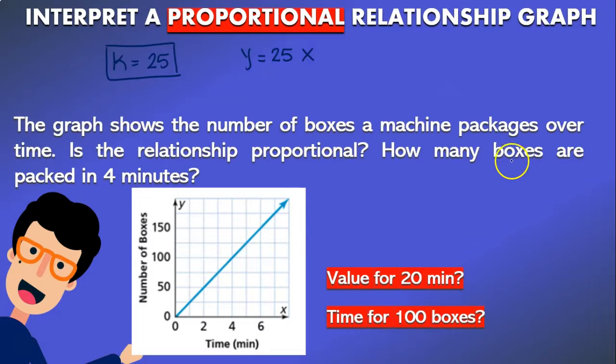Now, how many boxes are packed in 4 minutes? We have to remember that boxes is our value for y and minutes is our value for x. Now that we know that we can find our value for the boxes. So remember boxes equals y and it's equal to 25 times the value of x and in this case x is 4 minutes. So when we multiply 25 times 4 that is 100 boxes.